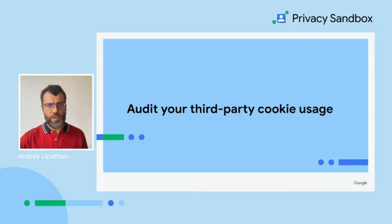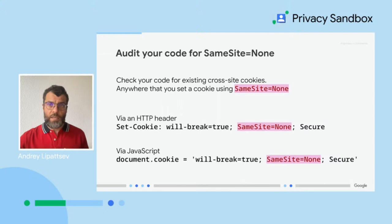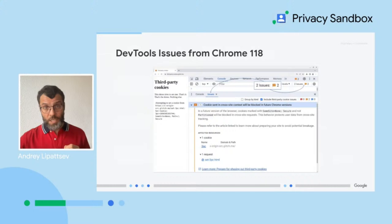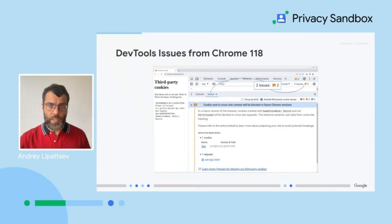Step number one: understand what's going on with your site or service. We have a whole video on this at goo.gl/3pcdaudit. Check your code for cookies with the SameSite=None attribute — these are intended for use across sites. If they are yours, why are you setting them with this attribute? If they aren't, these are your prime candidates to dive deeper into. You can also see blocked cookies as issues in Chrome DevTools. In the latest versions of Chrome, these are displayed as errors. Even if you don't handle the development of your site yourself, you can pass this information on to your development team.